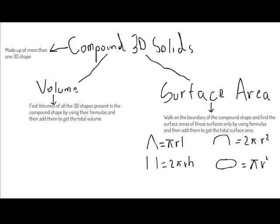For surface area, the approach is quite similar to the perimeter concept we used in 2D shapes. The perimeter covers outside boundaries, and surface area works exactly the same way. We just have to walk along the boundary of the compound shape and see what surfaces are on our path. We consider only those surfaces which are on the outside boundary, not the inside surfaces, and find their surface areas using the appropriate formulas, then add them to get the total surface area.